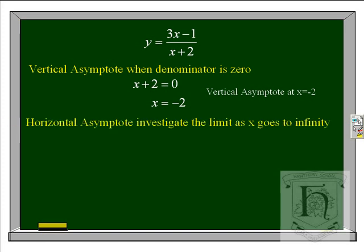To look at the horizontal asymptote we need to investigate what the function does as x tends towards infinity. We use a technique where we divide every term by the highest power of x present. So dividing 3x minus 1 over x plus 2 by x, we get 3 minus 1 over x over 1 plus 2 over x.